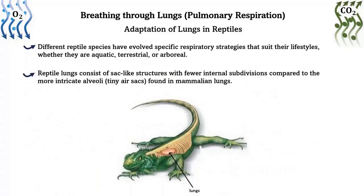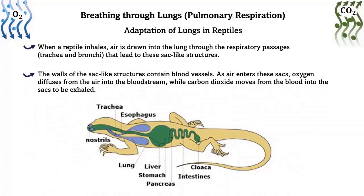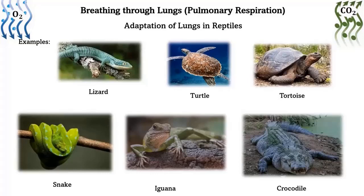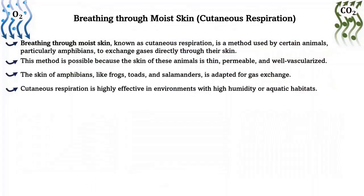Adaptation of lungs in reptiles: different reptile species have evolved specific respiratory strategies that suit their lifestyle, whether they are aquatic, terrestrial, or arboreal. Reptile lungs consist of sac-like structures with fewer internal subdivisions compared to the more intricate alveoli found in mammalian lungs. When a reptile inhales, air is drawn into the lungs through the respiratory passage leading to these sac-like structures. The walls of the sac-like structures contain blood vessels; as air enters the sac, oxygen diffuses from the air into the bloodstream while carbon dioxide moves from the blood into the sac to be exhaled. Examples: lizards, turtles, tortoises, snakes, iguanas, and crocodiles.